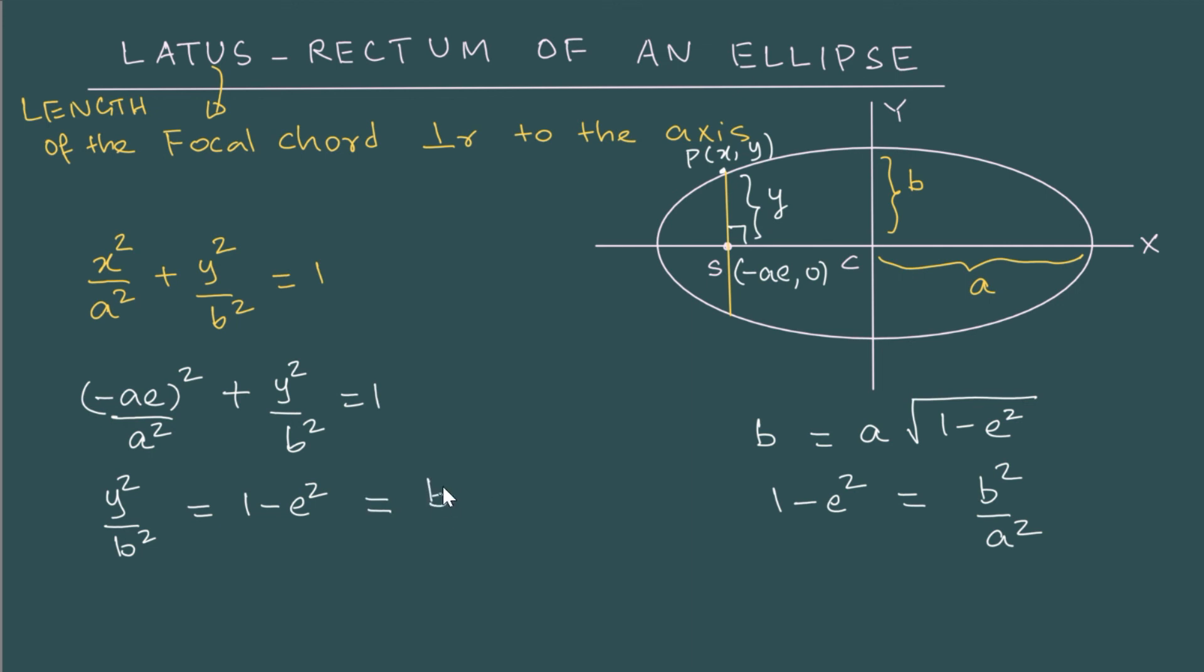So I have this as b square by a square. So what is y square here? y square is b to the power 4 by a square. And since we are only looking at the length, I can just take the positive value. So y is, if I take the square root of this, I get b square by a.